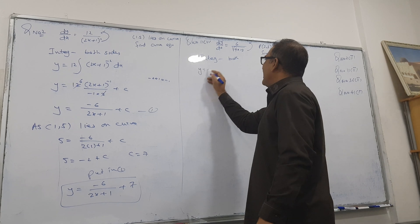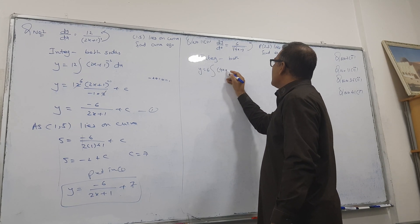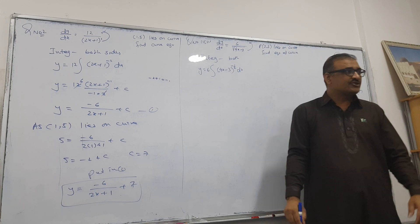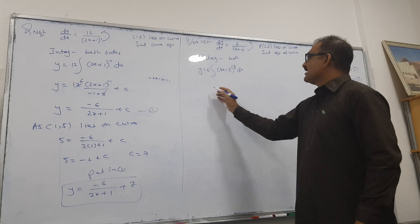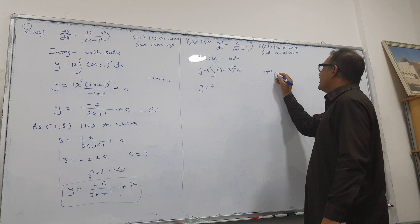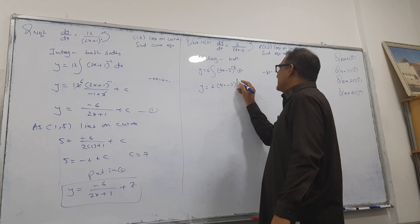So here I'm going by integral sign. 6 out, it goes up, 4x minus 3 to the power minus half. Is it okay or not okay? Sure. And now look here boys, now what is the rule of integration? Increasing means adding 1, it gives you plus 1 plus half.